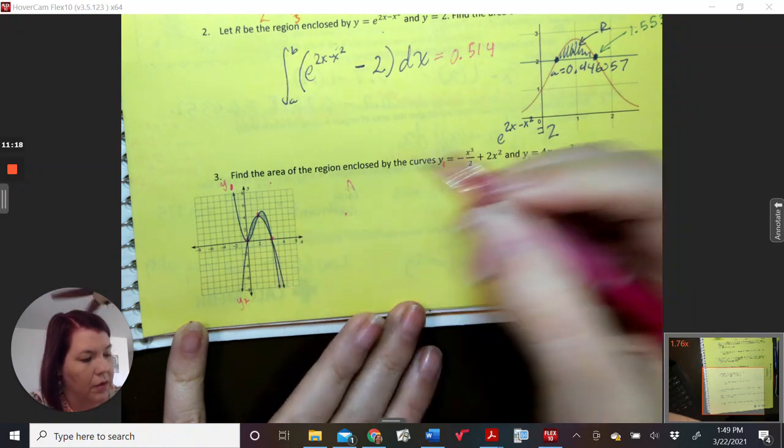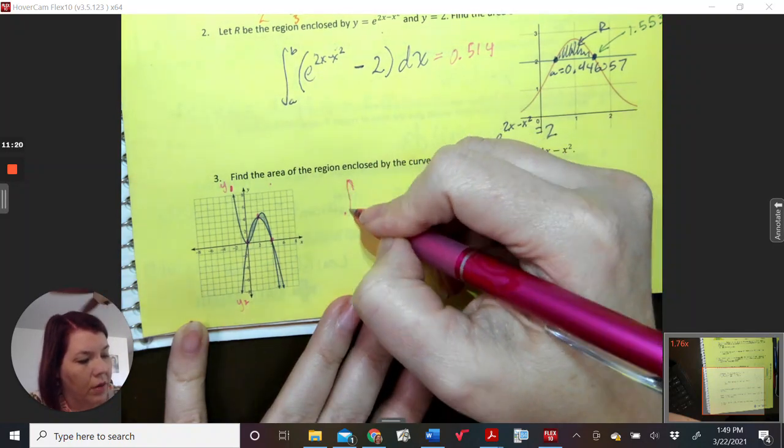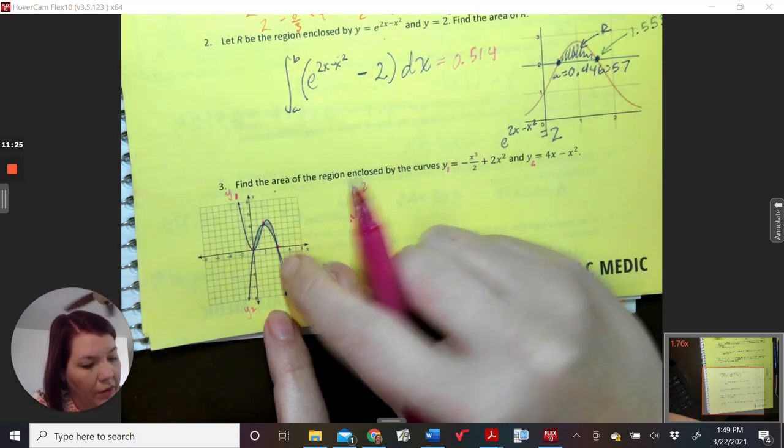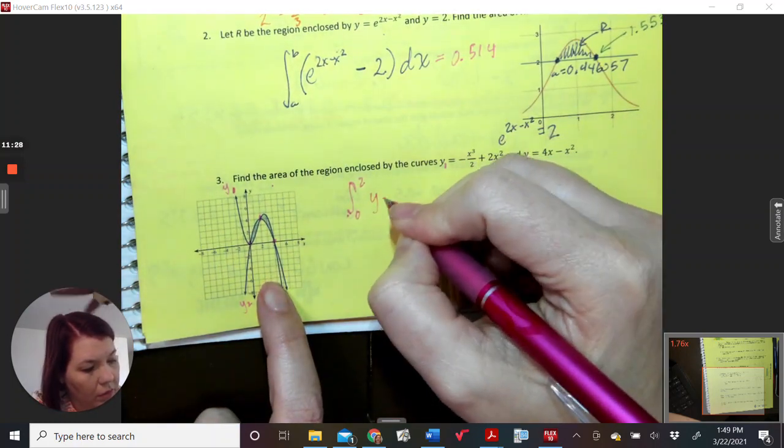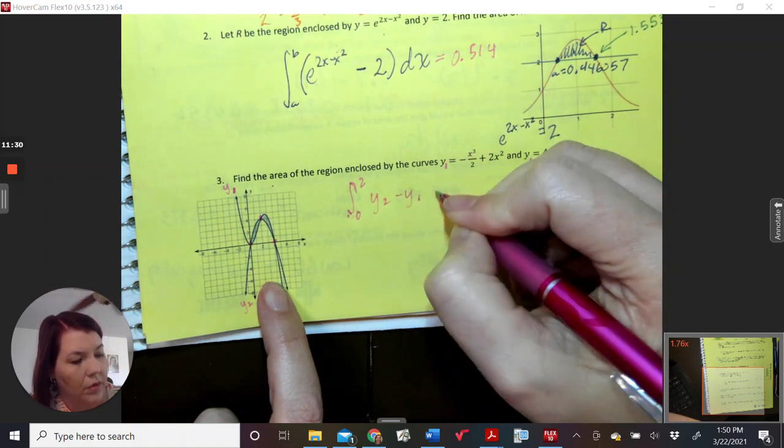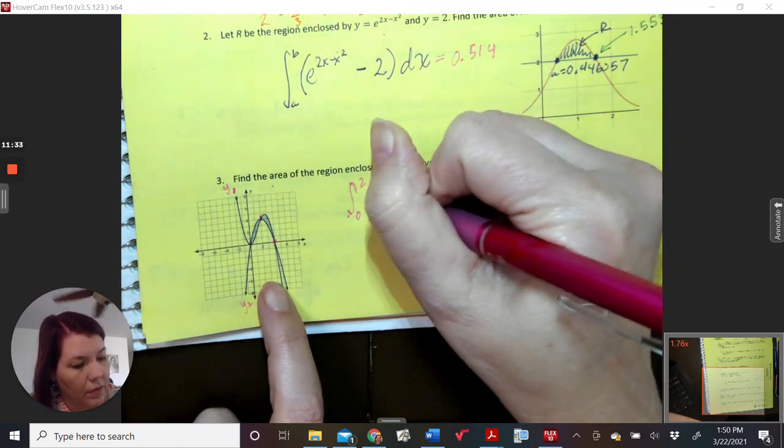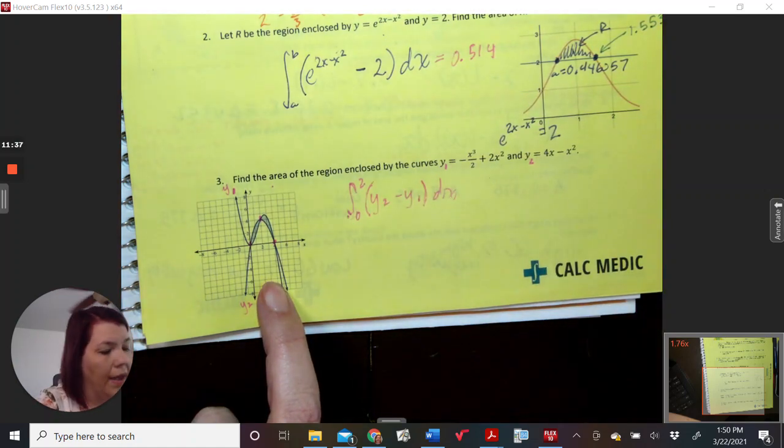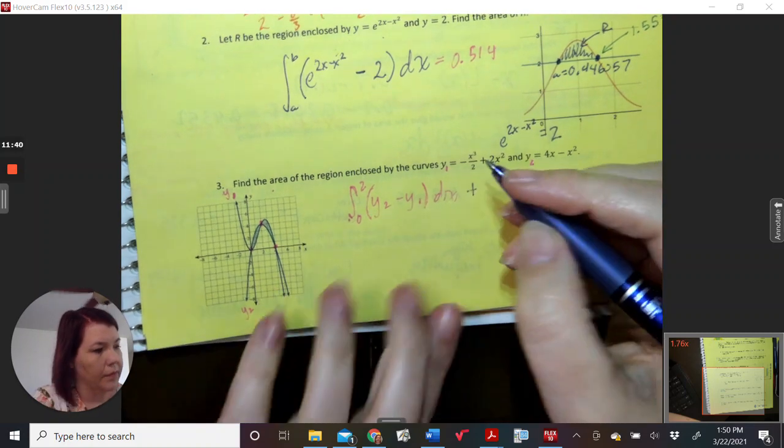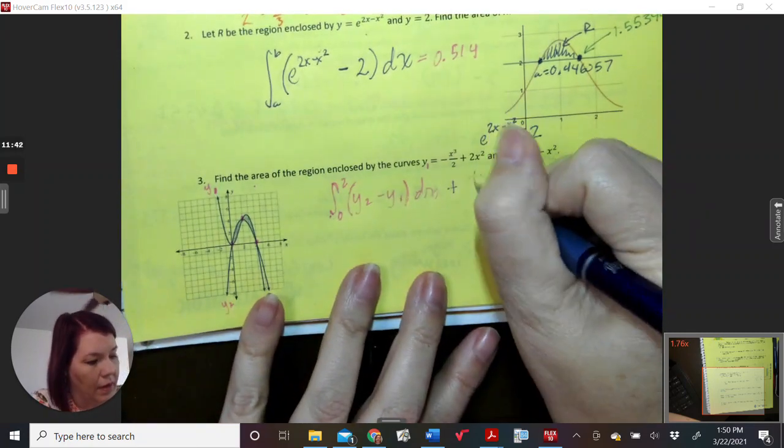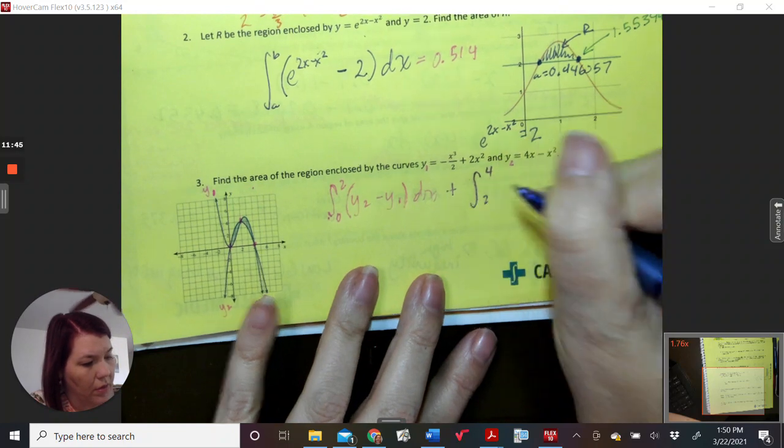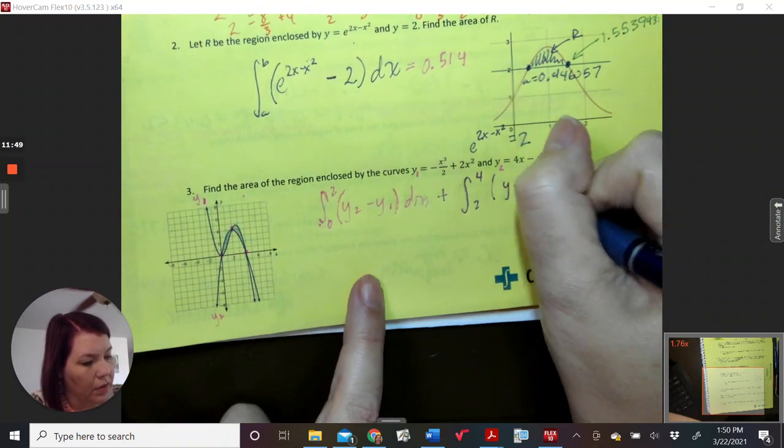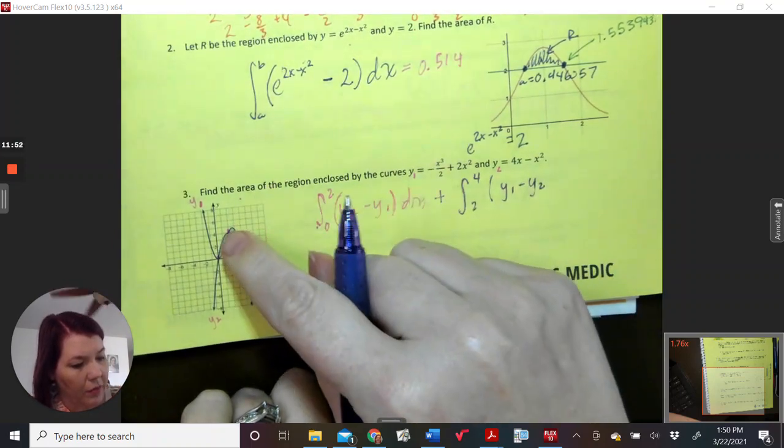So, my interval will go from 0 to 2 with the quadratic first. Then we will add to that the integral from 2 to 4. But now, Y1 is on top, the cubic, minus the quadratic. Quadratic is on the bottom, dx.